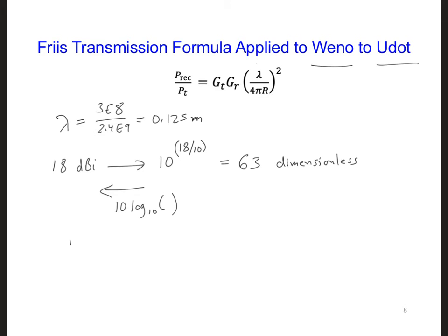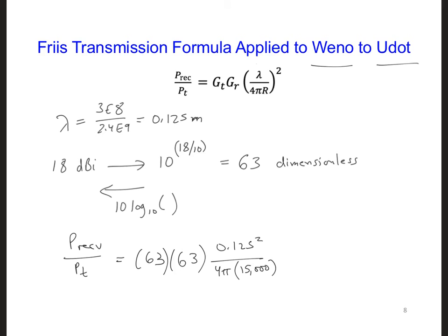Putting it all together: P_received / P_T = 63 × 63 × (0.125)² / (4π)², with R = 15 kilometers squared in the denominator. That equals 1.74 × 10⁻⁹, or approximately −87 dB.